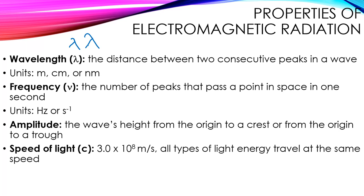The next property is frequency, which uses the Greek letter nu, which looks basically like a V. This is the number of peaks that pass a point in space in one second. If you can envision counting waves passing by like a buoy at a beach, that's measuring frequency. The more waves go by the higher the frequency, and we use the unit Hertz, abbreviated Hz.